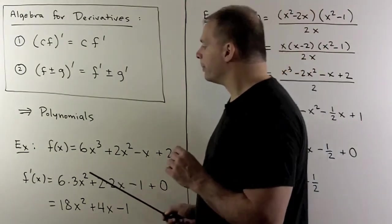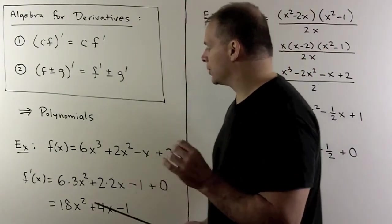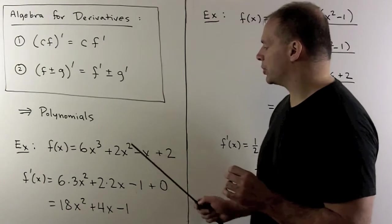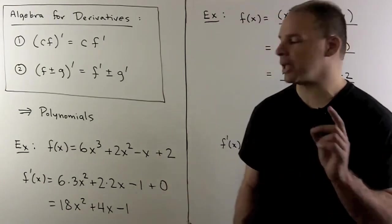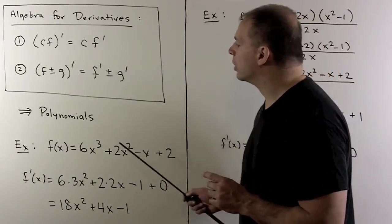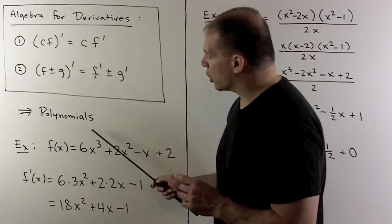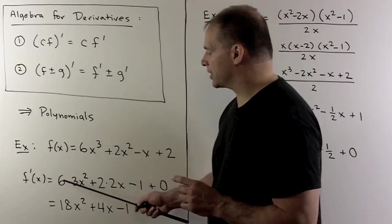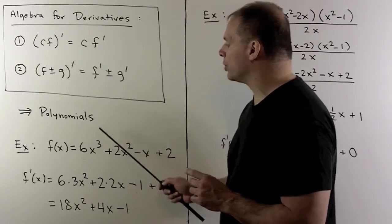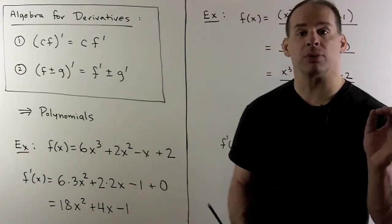So, for example, let's take f of x equal to 6x cubed plus 2x squared minus x plus 2. Our first rule says we could just pull the 6 to the side, and then we apply the power rule to x cubed. So we get 3x squared.